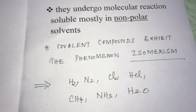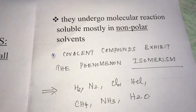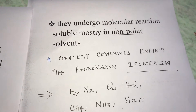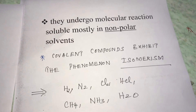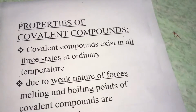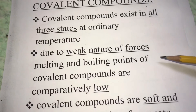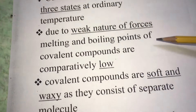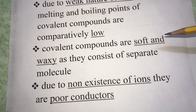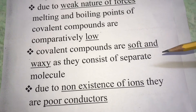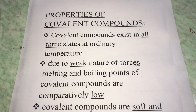Covalent compounds also exhibit the phenomenon of isomerism. Examples of covalent compounds include HCl, methane, ammonia, and H₂O. To summarize: they exist in three states of matter, have low melting and boiling points due to weak forces, are soft and waxy as separate molecules, and are poor conductors due to non-existence of ions.